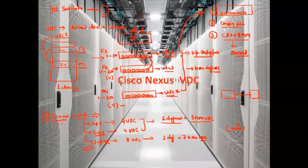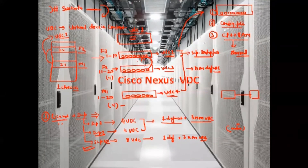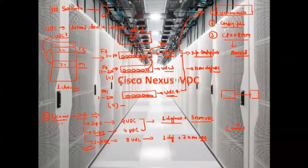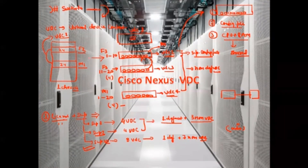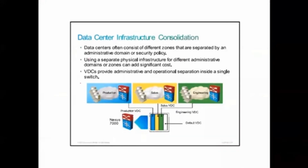If you are accessing the Nexus box remotely from a different location, each VDC will have its own management IP — similar to a separate management VLAN on individual switches and routers. From that management IP, you can Telnet or SSH into that specific VDC remotely. The details of how management is configured will be covered later.